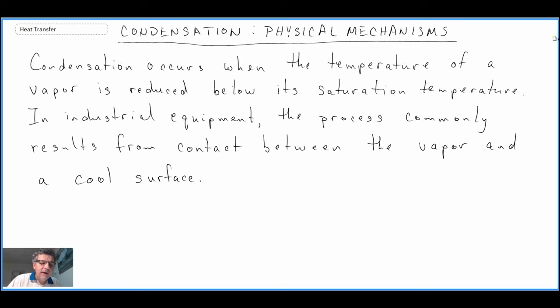When we look at condensation heat transfer, what is happening is we have a surface that is at a temperature lower than the saturation temperature of a vapor. Consequently, what happens on that surface is the vapor goes through a phase change and goes from the vapor state back into the liquid state.